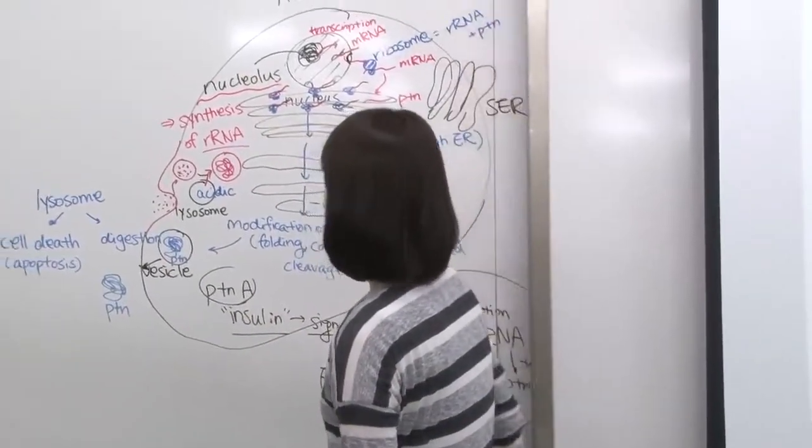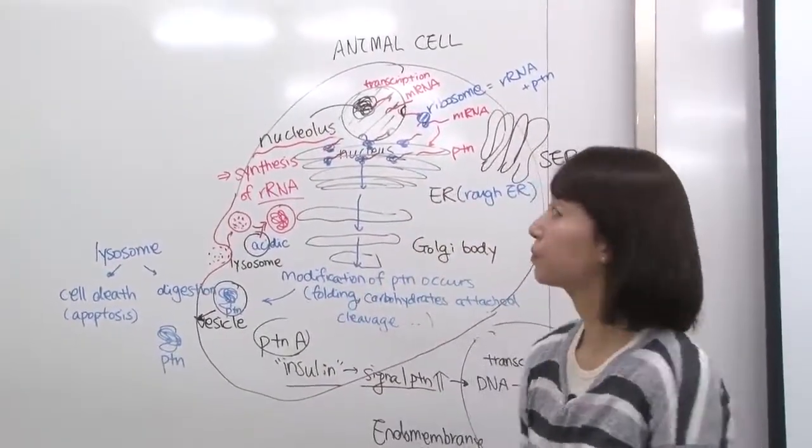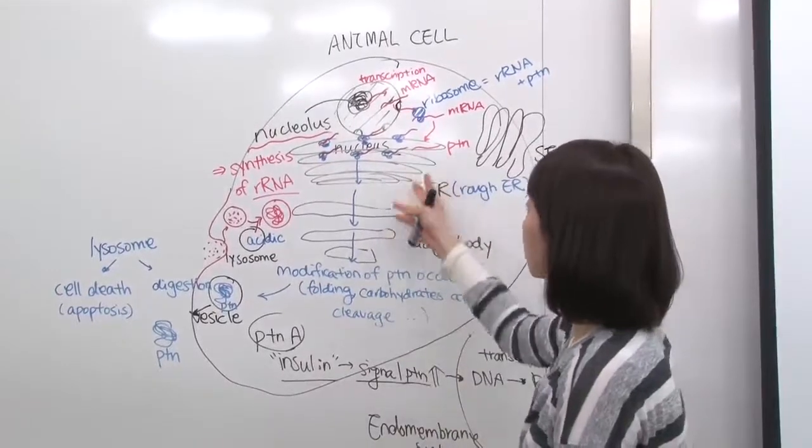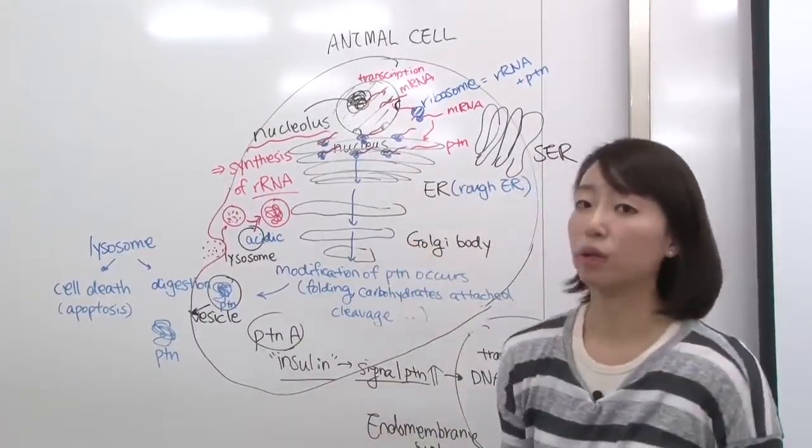Prokaryotic cells don't really have this kind of structure. They don't have ER, Golgi body, or organelles.